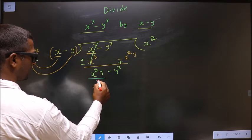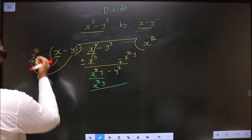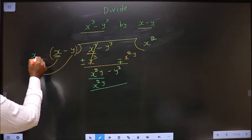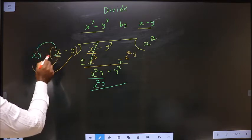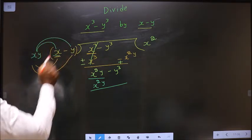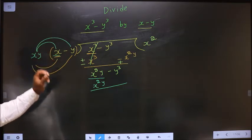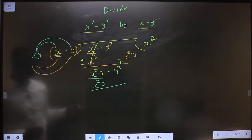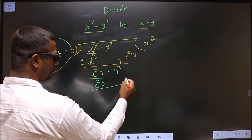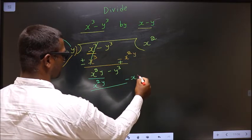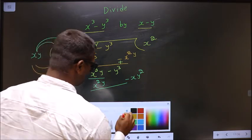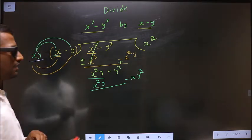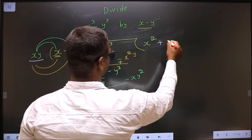Here there is x square y, so below this we should also get x square y. Here it is x in the divisor. To get x square y, this should be multiplied with xy. When I am multiplying to this, I should also multiply to the other term. So xy into x is x square y, and xy into minus y is minus x y square. That term is not present here, so I write it separately: minus x y square. This is the second term of the quotient, so write it in the quotient — plus xy.